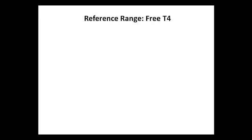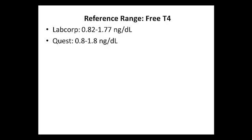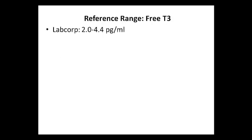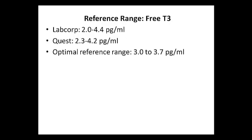Let's discuss the reference range for the free T4. According to LabCorp, the reference range is 0.82 to 1.77 nanograms per deciliter. Quest Diagnostics has a reference range of 0.8 to 1.8 nanograms per deciliter. The optimal reference range should be 1.1 to 1.5. For free T3, LabCorp's reference range is 2.0 to 4.4 picograms per milliliter, Quest Diagnostics has 2.3 to 4.2 picograms per milliliter, and the optimal reference range should be 3 to 3.7.